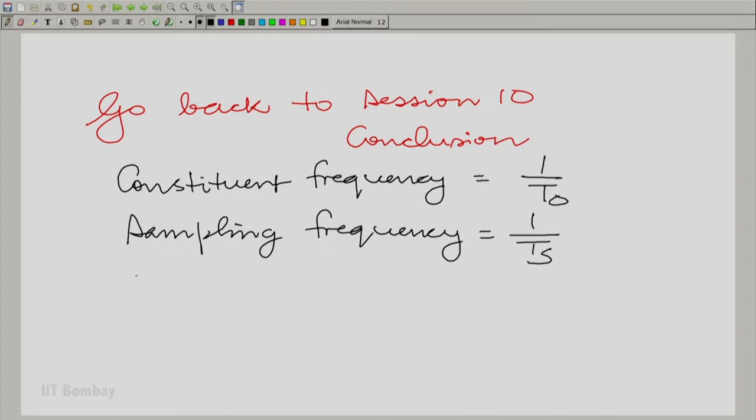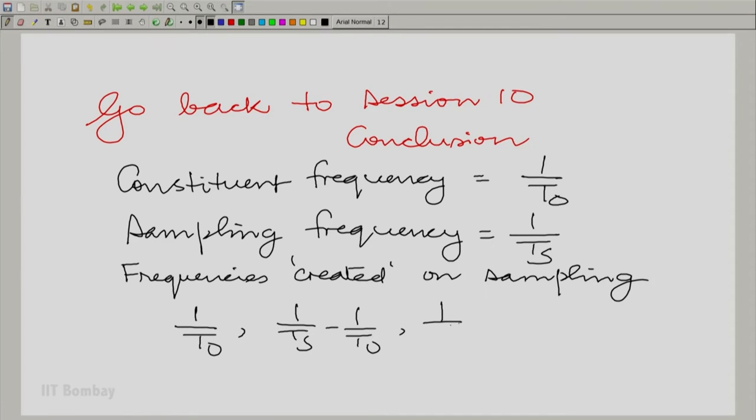Of course, you know the frequencies created on sampling are as follows. They begin with 1/T0, then you have 1/Ts minus 1/T0, 1/Ts plus 1/T0, 2 times. So, 2/Ts minus 1/T0, 2/Ts plus 1/T0, and so on.